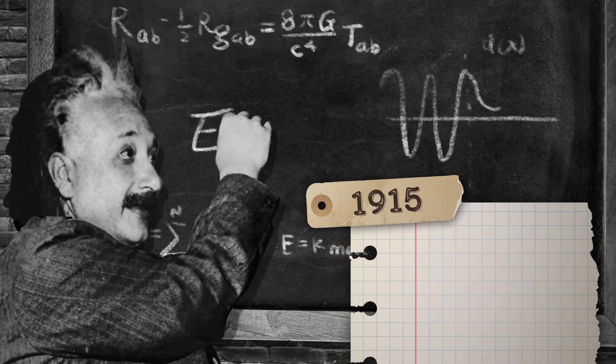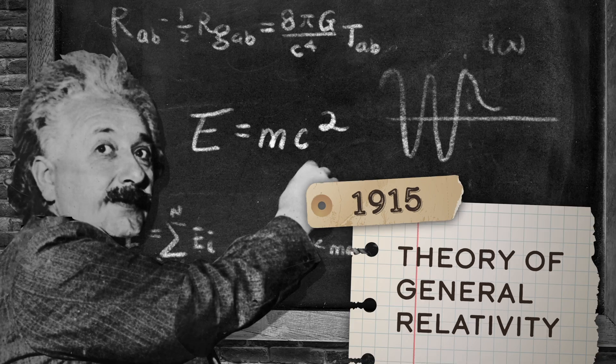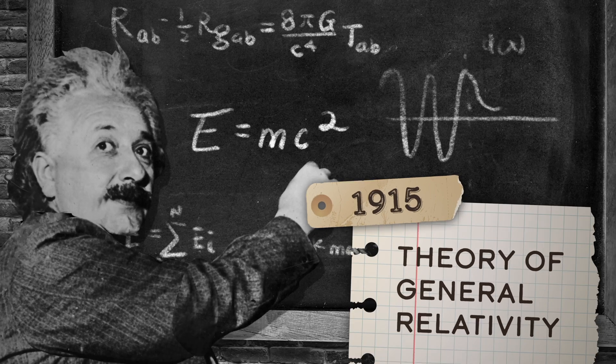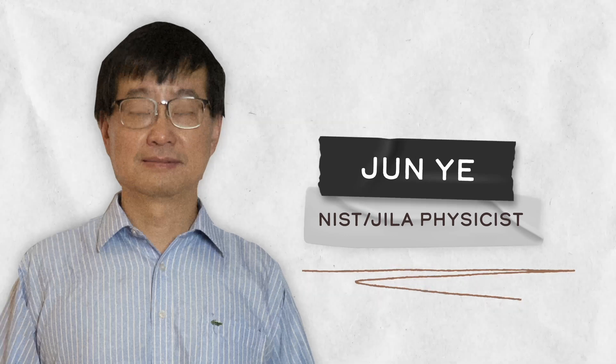In 1915, Einstein published his theory of general relativity, which explains how gravity affects space and time. Today, more than a hundred years later, scientists like NIST's Jun Ye are still undertaking research that proves his theory is correct.